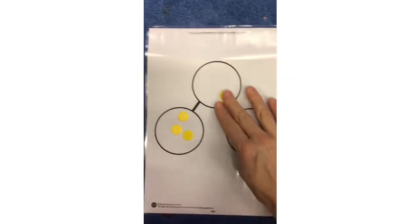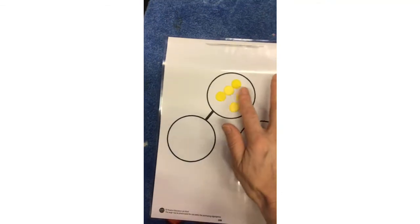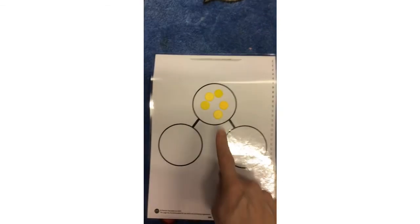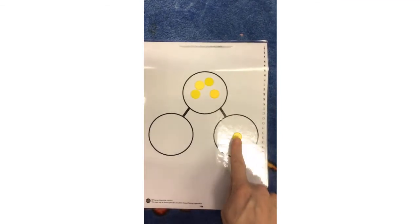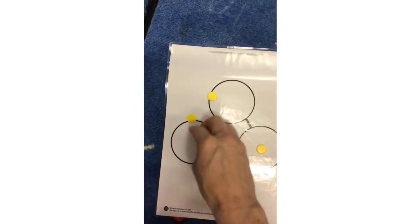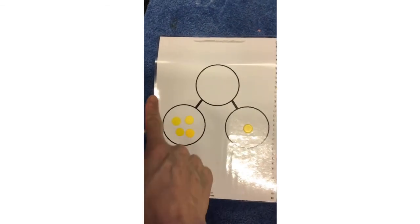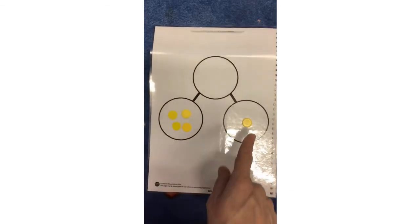I'm putting them back together. Is there another way that I can put them into two parts? This time I'm going to put one here and then I'm going to put all the rest over here. One, two, three, four here and one here.